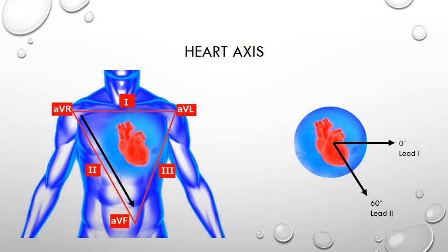Lead two is calculated by measuring the voltage from the right arm to the left leg, and this is 60 degrees on the heart's axis. And then we have lead three, which is calculated by measuring the voltage from the left arm to the left leg, and this is 120 degrees on the heart's axis.